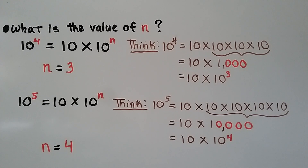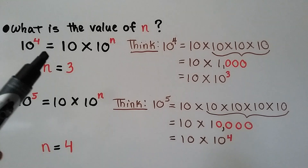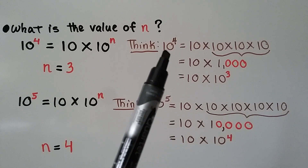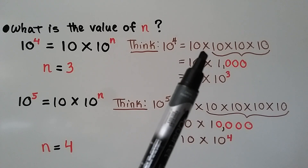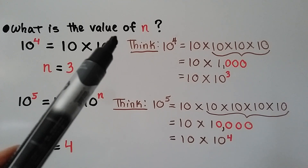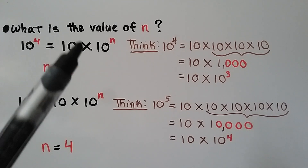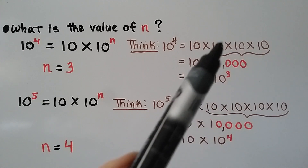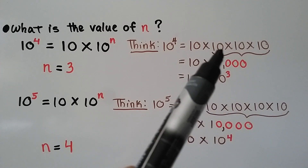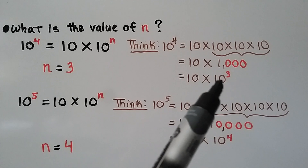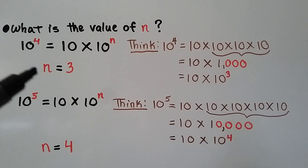What is the value of n? We have 10 to the 4th power equal to 10 times 10 to the nth power. 10 to the 4th power has 4 factors of 10 — 10 times 10 times 10 times 10. Since one factor of 10 is already shown separately, we need the remaining factors: 10 times 10 times 10, which is 1,000. We have 3 zeros, so we can write it as 10 to the 3rd power. In this case, n equals 3.